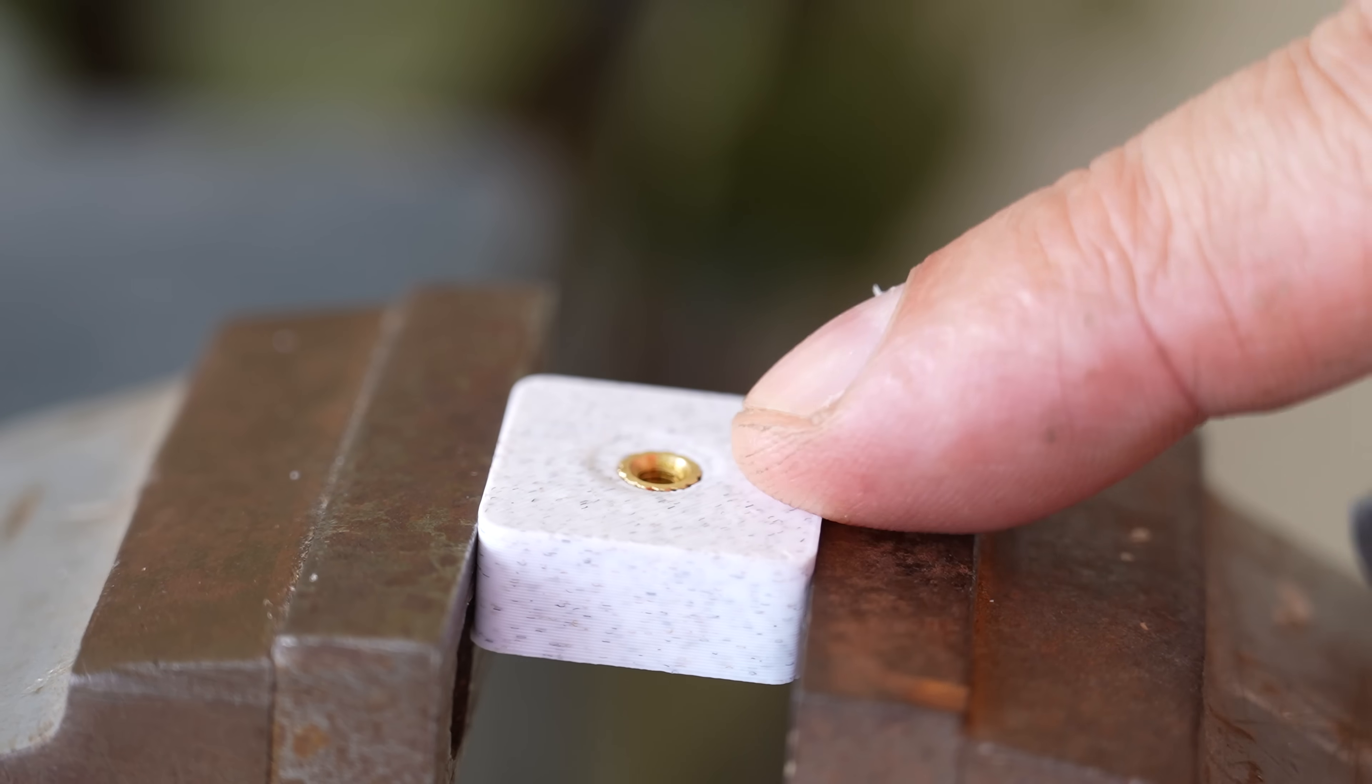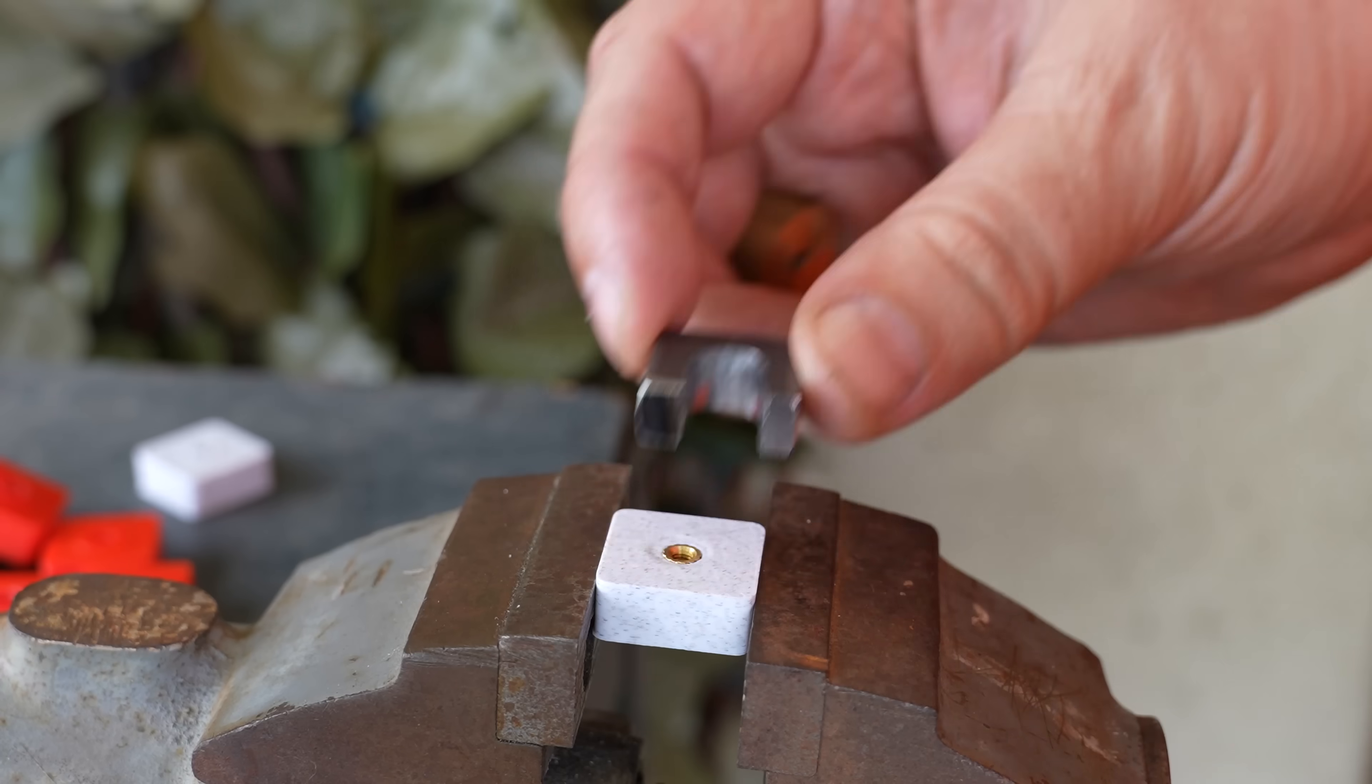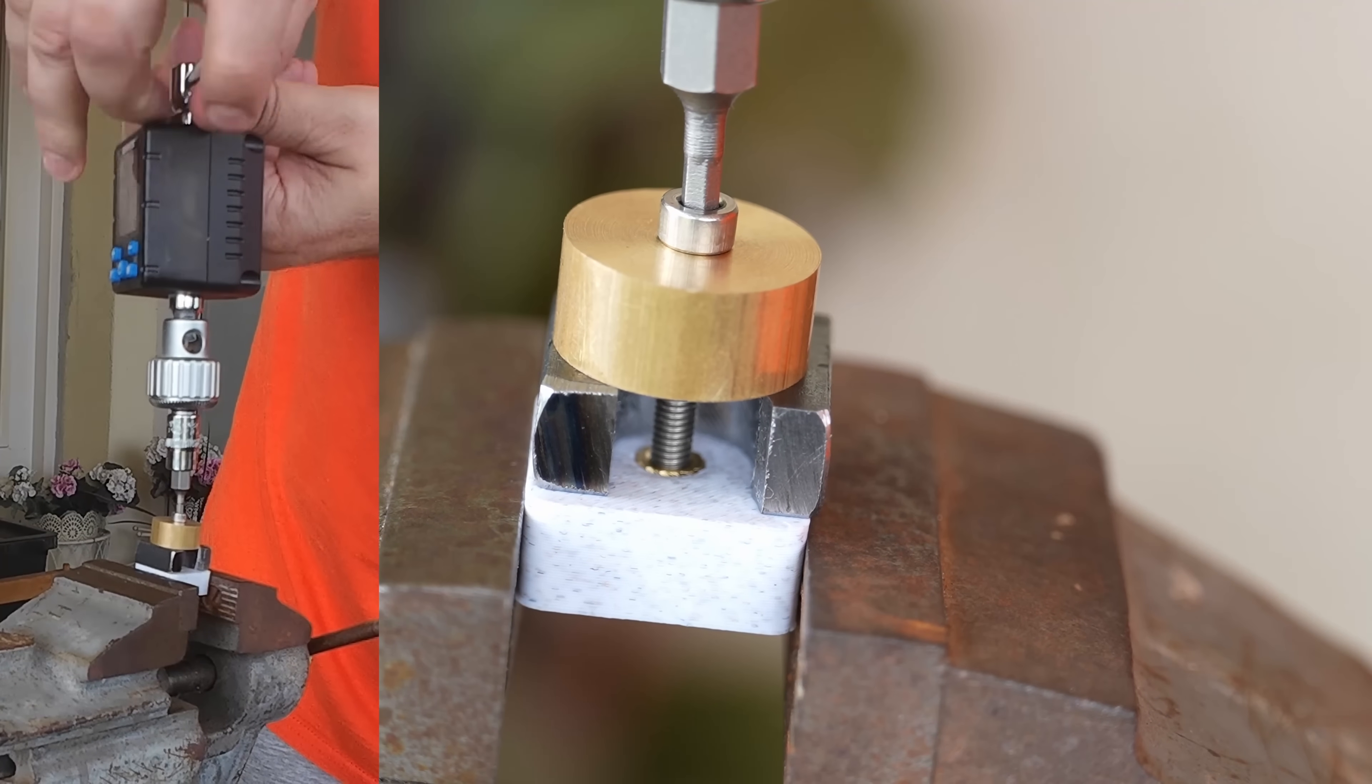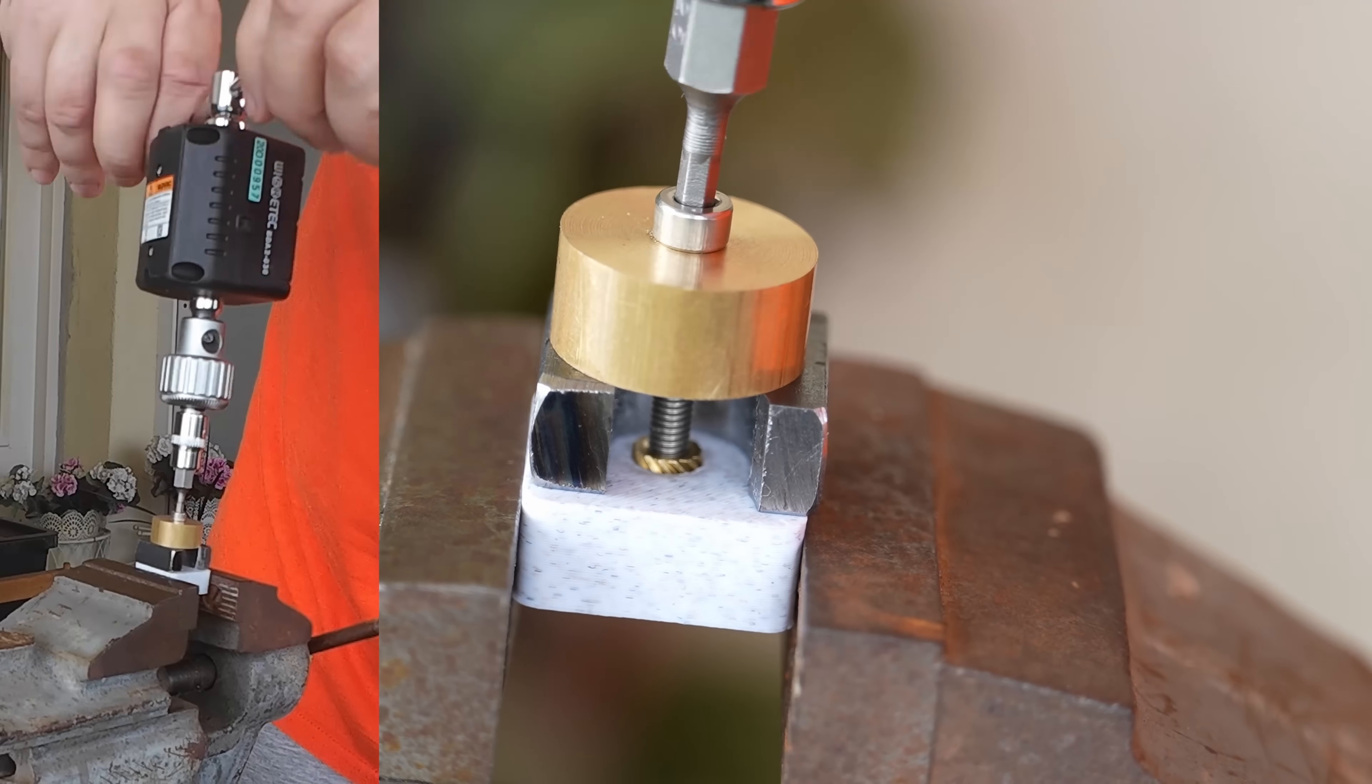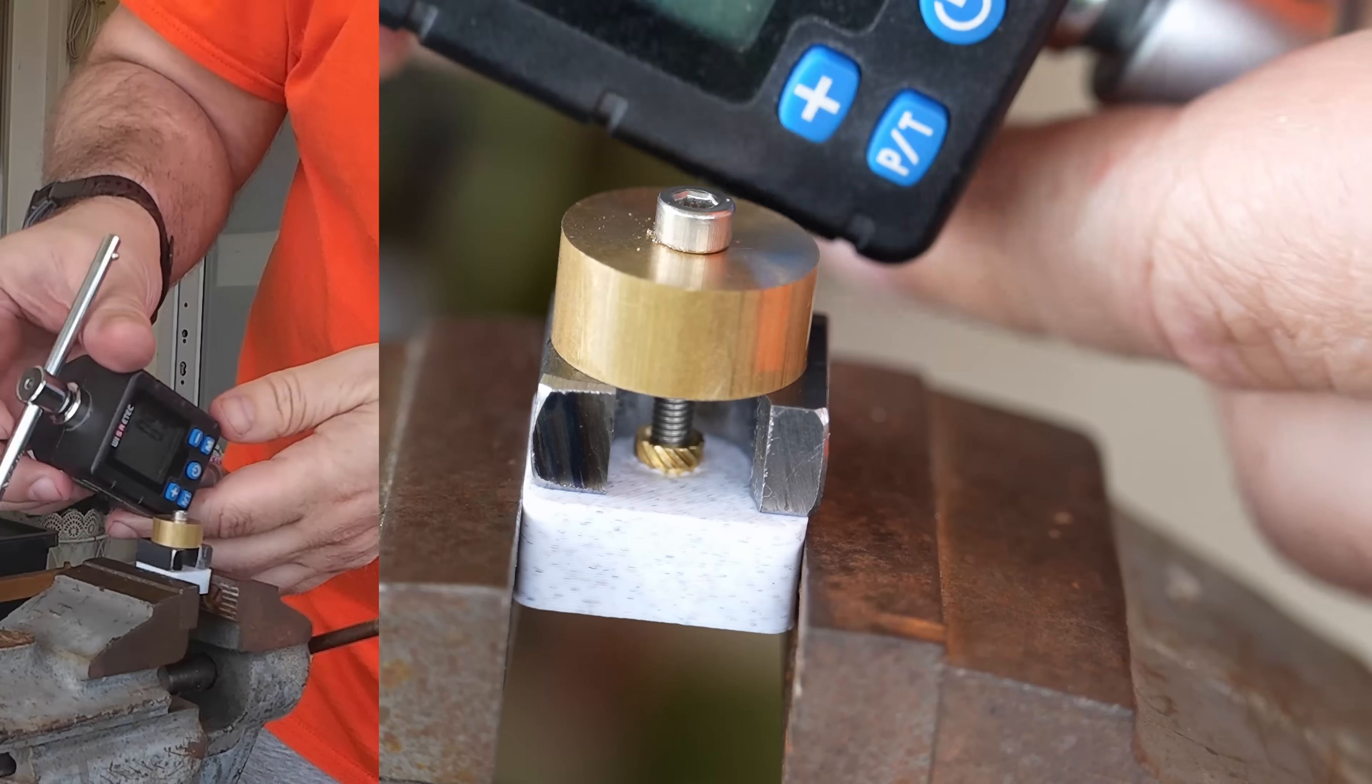This one should be stronger a little bit because it is pressed in with this bolt and it's a little bit deeper. And now let's repeat this test. In our pullout test this bolt method was a little bit stronger. Let's see if this will be the case here with the torque. 0.9 Nm. So slightly stronger but I'm still not too happy with these results.